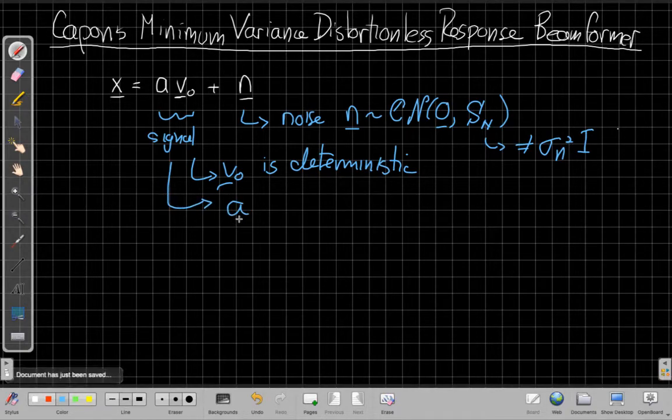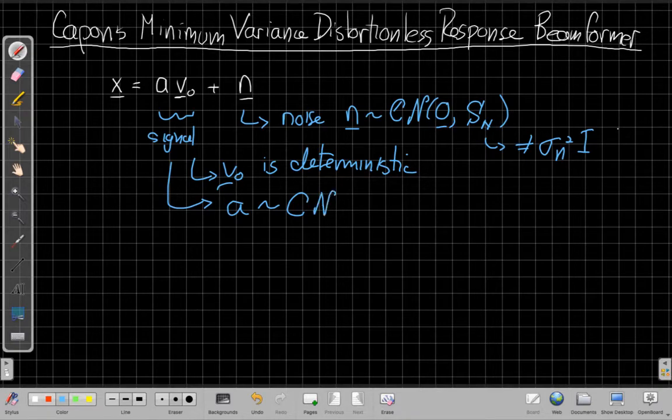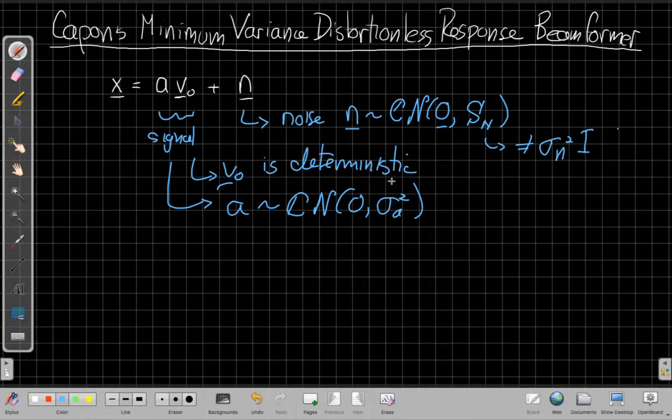And we'll assume that A, this amplitude, which is a scalar, is also a scalar complex Gaussian with zero mean and some variance sigma A squared. But the main thing for deriving Capon is just that we know this thing is deterministic, so we want to set the gain to be one in that direction.